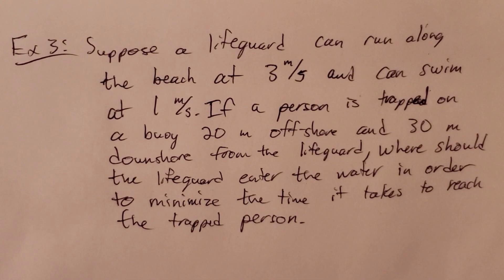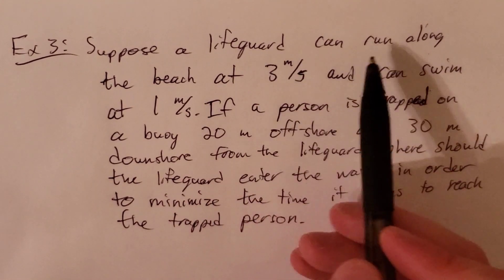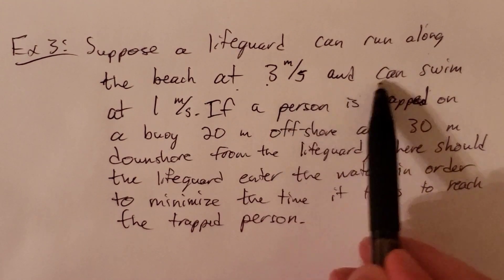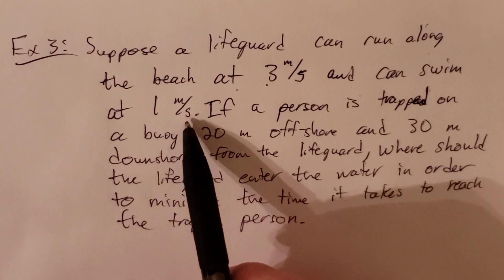This will be our third example of an optimization type problem. Here we're going to suppose a lifeguard can run along the beach at three meters per second and can swim at one meter per second.